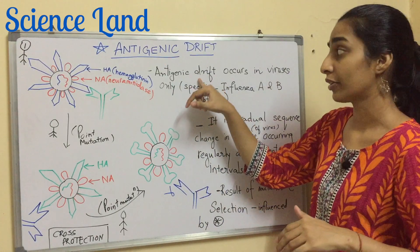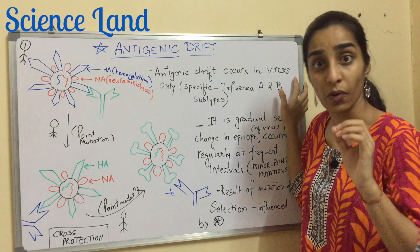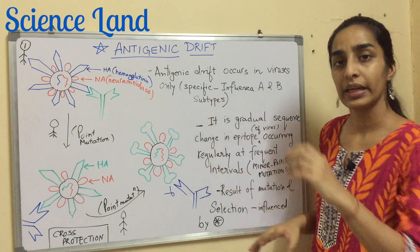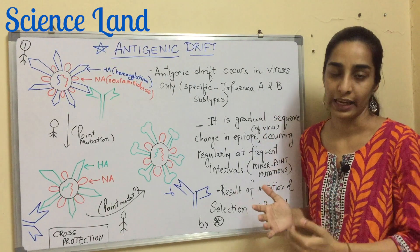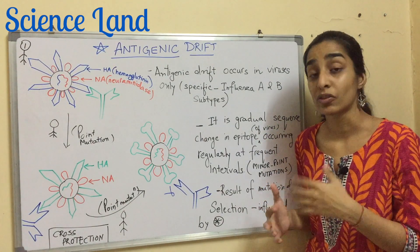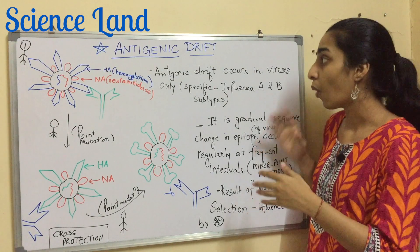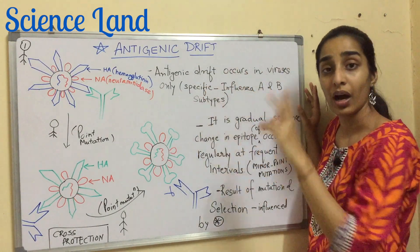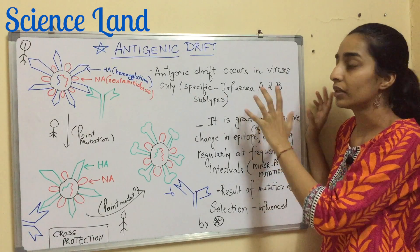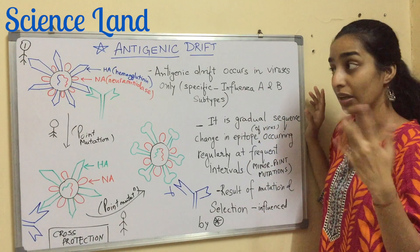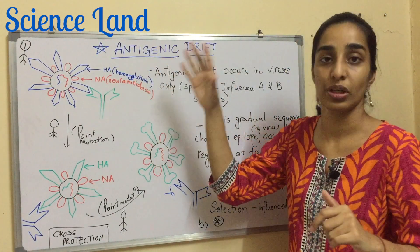Today we are talking about antigenic drift. It is a kind of genetic variation which occurs in viruses only — more specifically, it occurs most in influenza virus A and to a lesser extent influenza virus B. It has not been documented in influenza virus type C. Remember, antigenic drift occurs in both influenza A and B.